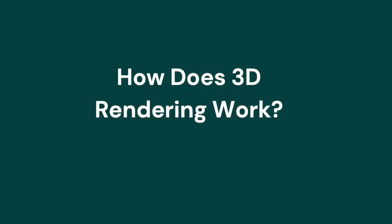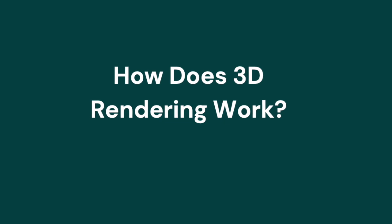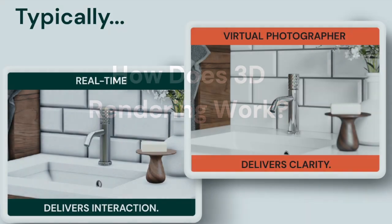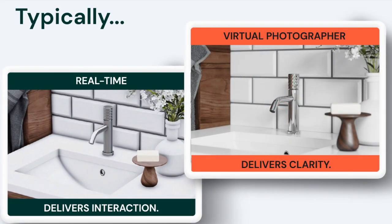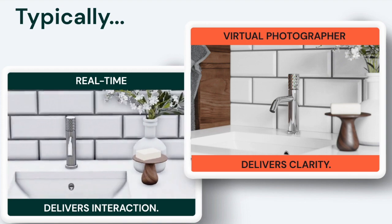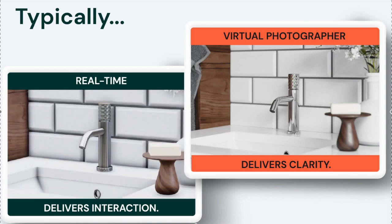Hey everyone, welcome back. Today we are going to talk about how 3D rendering works and what exactly the process involves. The 3D rendering process involves a combination of strategy, software, and artistry. It's not enough to have a plan for which items you want to visualize in 3D — you also have to have the right tools and enough experience to make the final product look appealing to viewers.